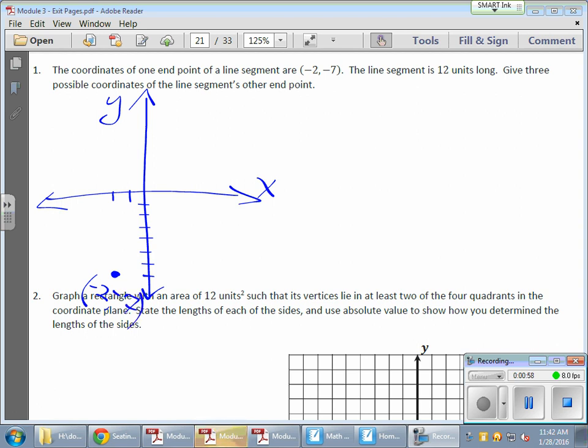And if I was to draw this aligned segment that's 12 units long, what could be some possible endpoints? So maybe I could draw it this way, I could draw it this way, I could draw it this way, I could actually draw it this way as well, but they just want three of these guys. All kinds of little scenarios, figuring things out.